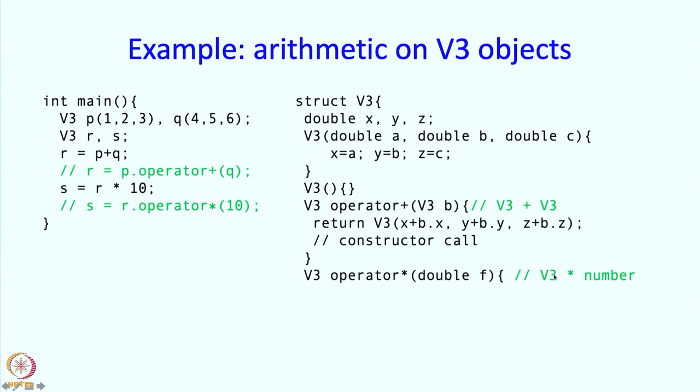So this is an implementation of v3 times number. So f is that number. And what is going to happen over here? You should be able to write this now. We are going to return an object whose numbers are x dot f, y dot f and z dot f and we want to return a v3 object. So we just call the v3 constructor with these arguments. So that is it. So this allows us to do arithmetic on v3 objects.